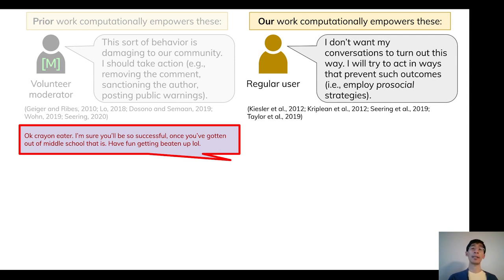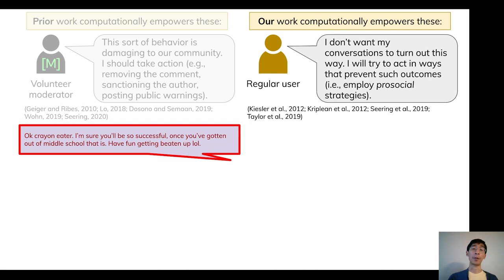Most users in online communities are well-intentioned, in the sense that they are not out to cause trouble — they genuinely want meaningful interactions. As such, these users will try to act in ways that prevent norm-violating outcomes. However, despite their best efforts, even the most well-intentioned users can still succumb to norm-violating behavior.